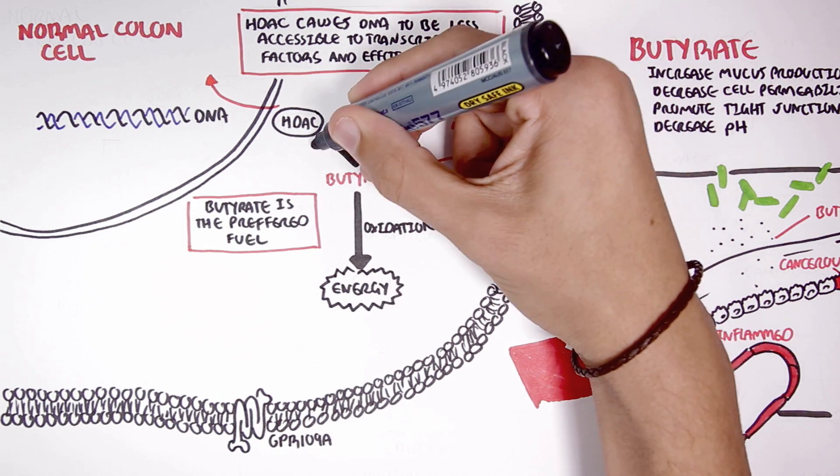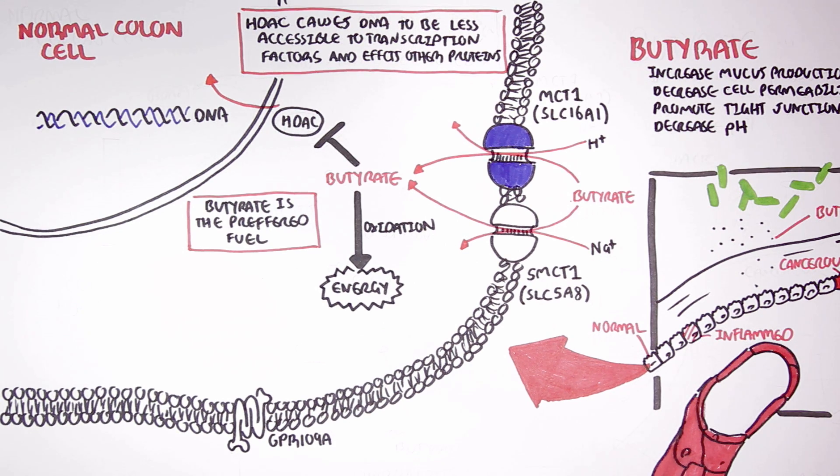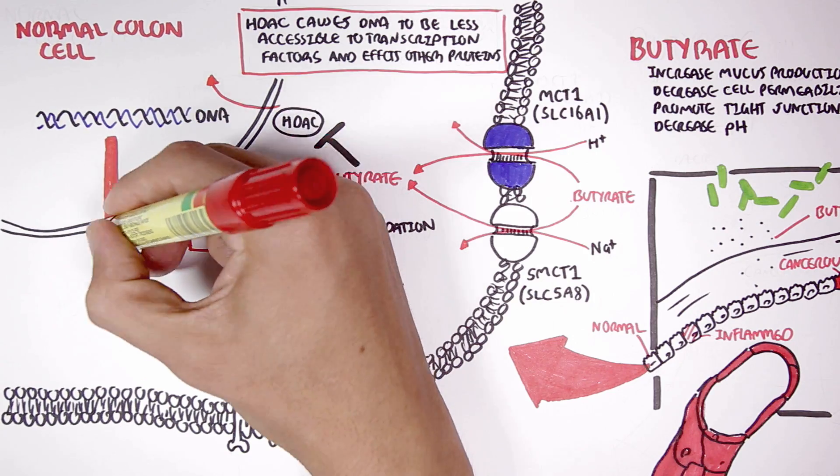Butyrate has been shown to be an inhibitor of HDAC. Through this function, butyrate helps maintain colon homeostasis.